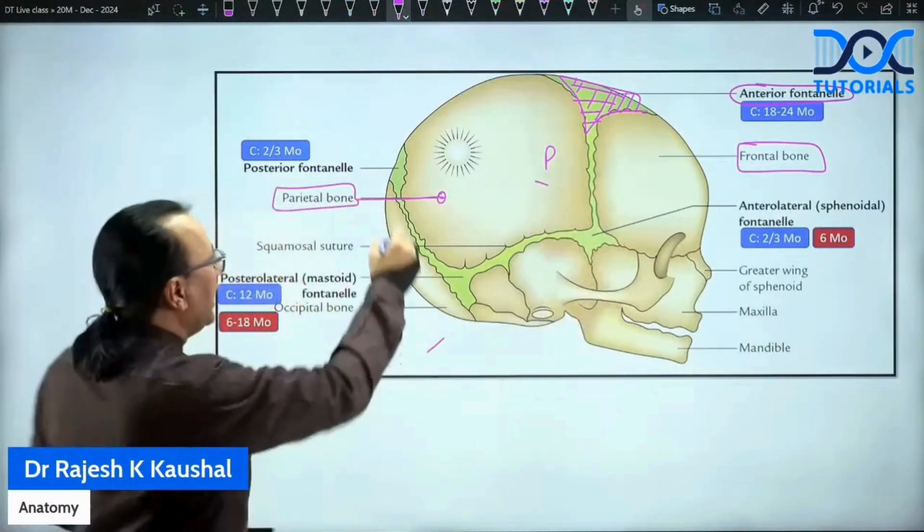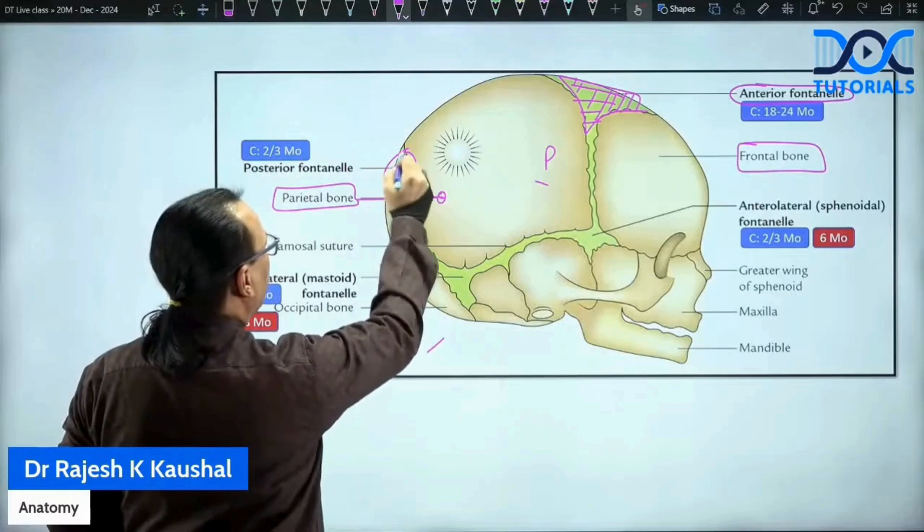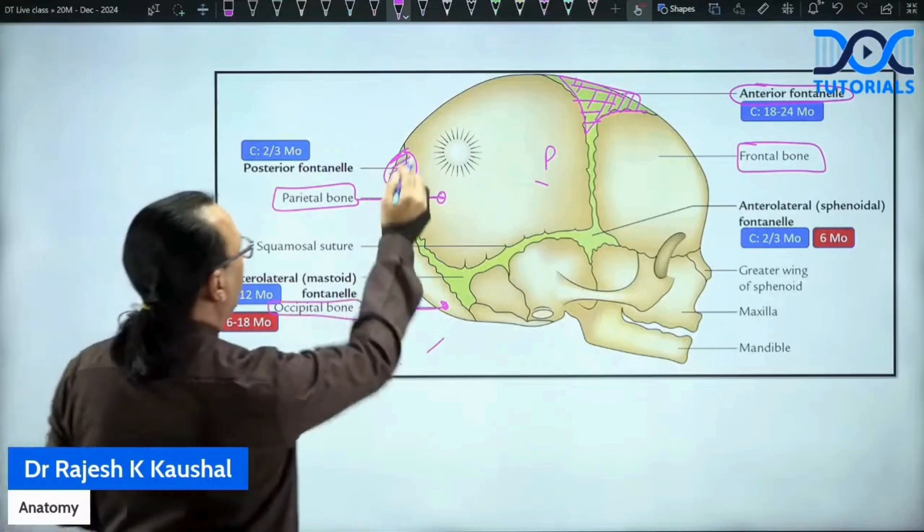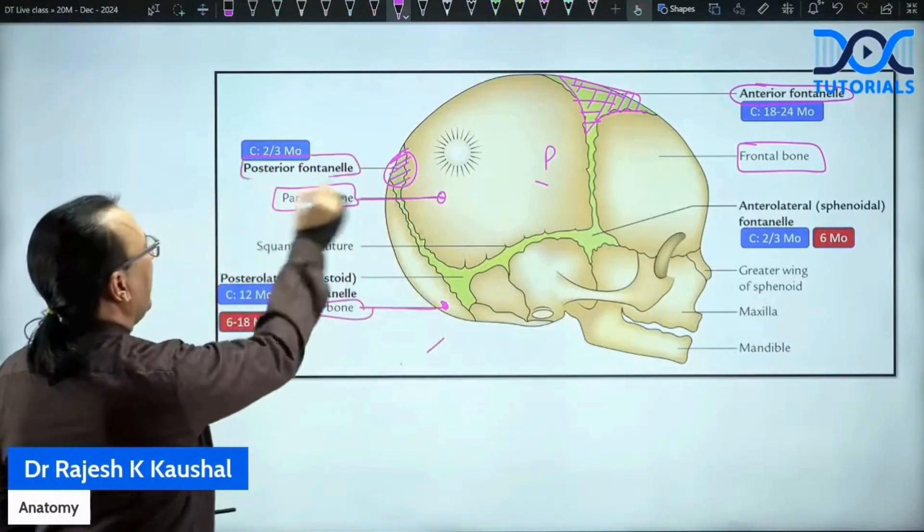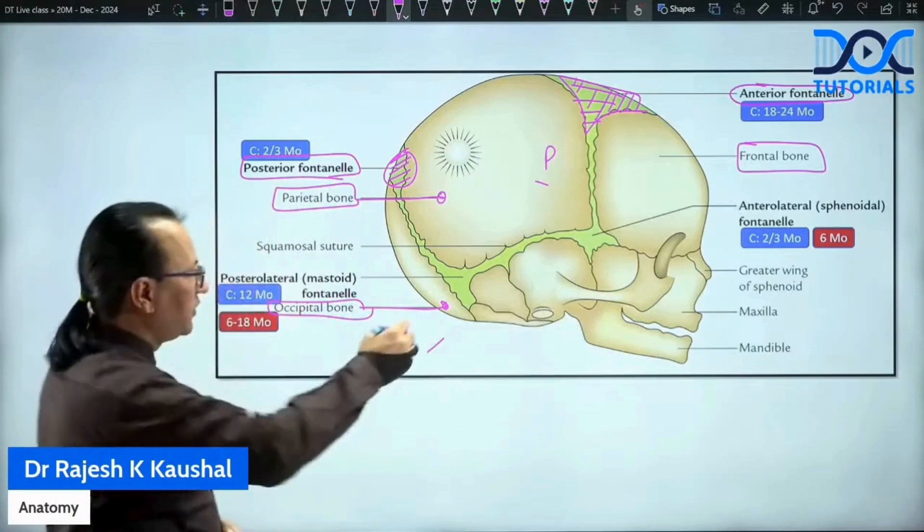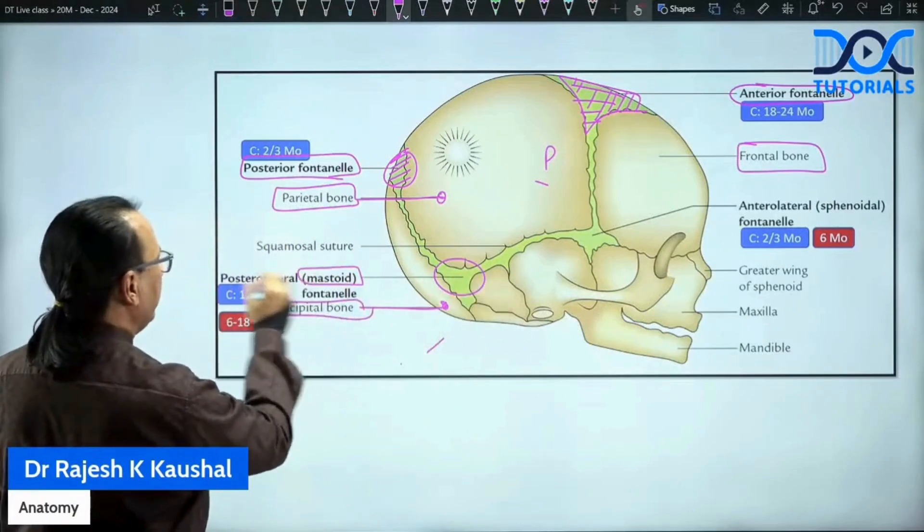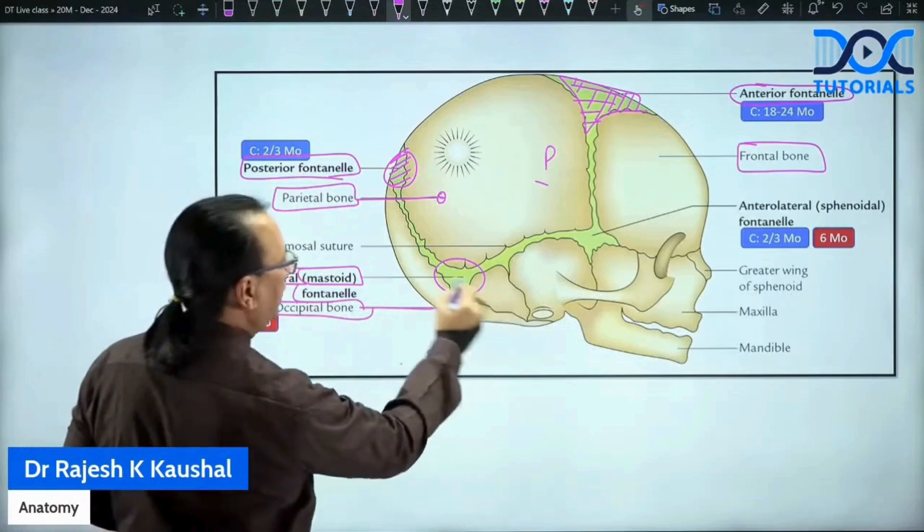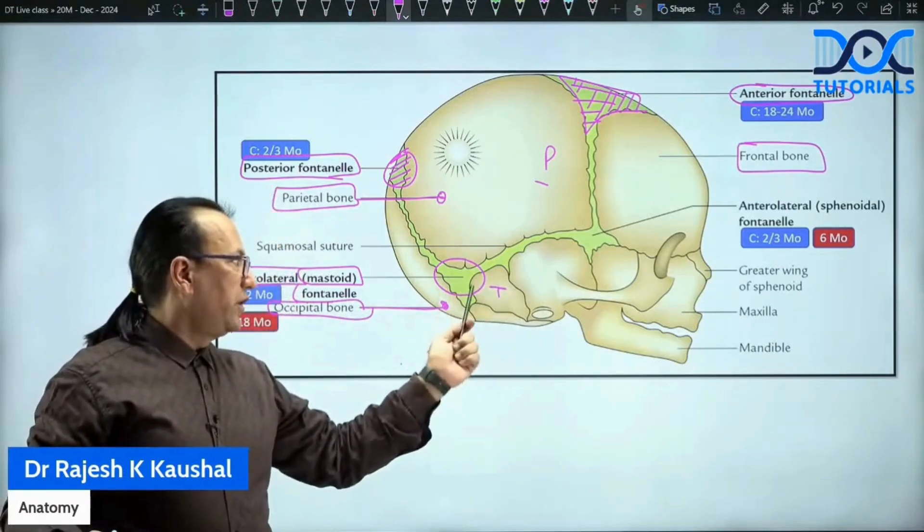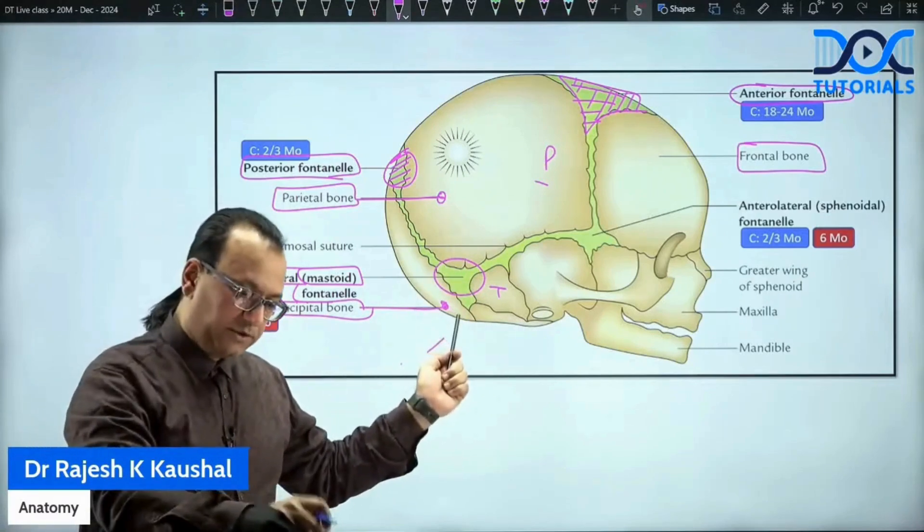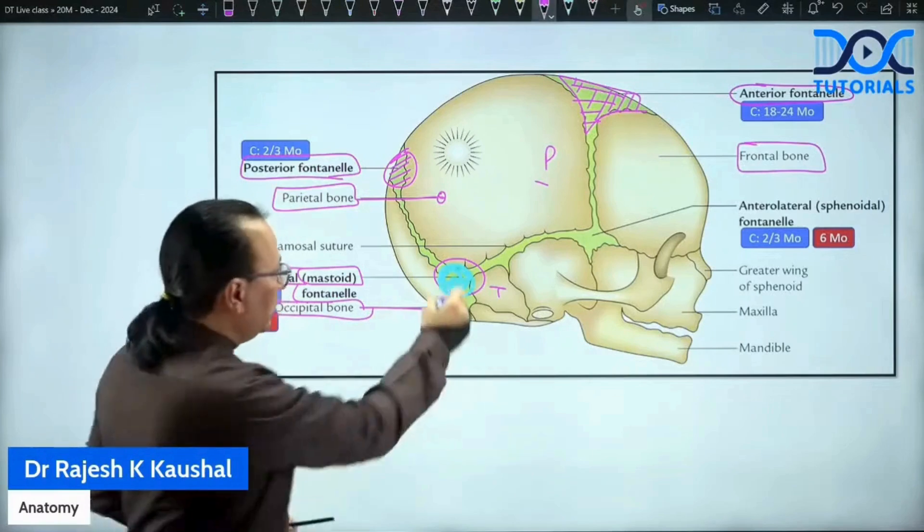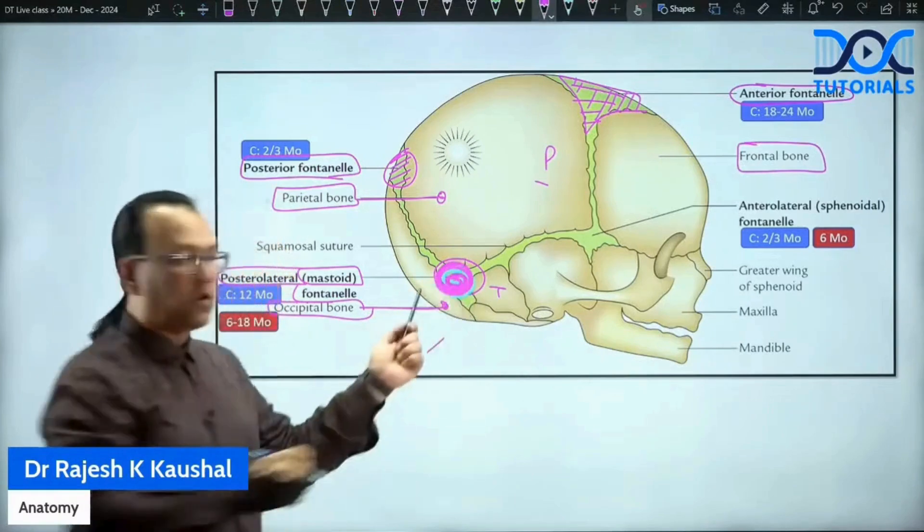Then we have a posterior fontanelle and posterior fontanelle, as you can see, is between parietal anterior and then you have occipital bone posterior. So that will be posterior fontanelle. Then we are having the posterolateral and anterolateral. Posterolateral is also called as the mastoid fontanelle because it is relating with the mastoid part of temporal bone. So a third bone has come, mastoid part of temporal, the occipital bone and parietal bone. That is what is making this fontanelle, which is basically the posterolateral fontanelle or mastoid fontanelle.